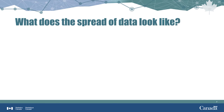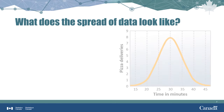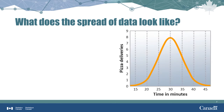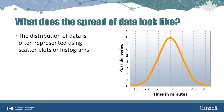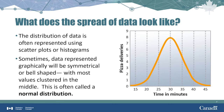Before we begin, let's take a quick look at some common ways that data are spread — that is, clustered together or spread out. The distribution of data is often represented using scatter plots or histograms, and their shapes show the spread of the dataset. Data can be represented graphically in a symmetrical bell shape, as seen in a graph of pizza delivery times, where most values are clustered in the middle between 20 and 40 minutes, while some deliveries take less time and others take longer. This is called a normal distribution.